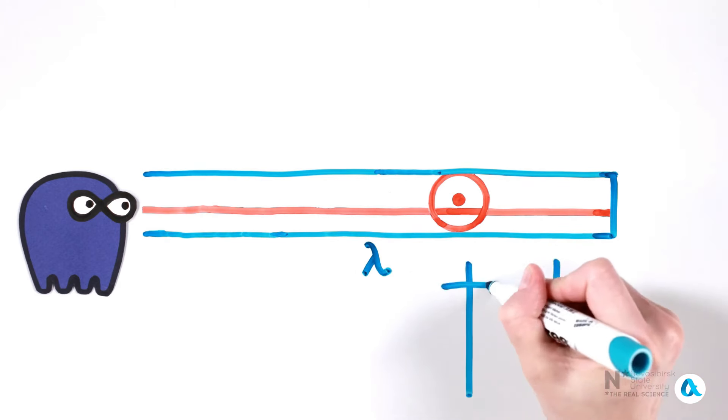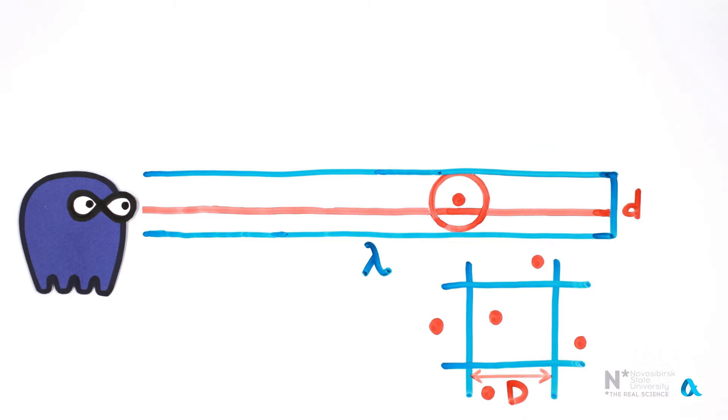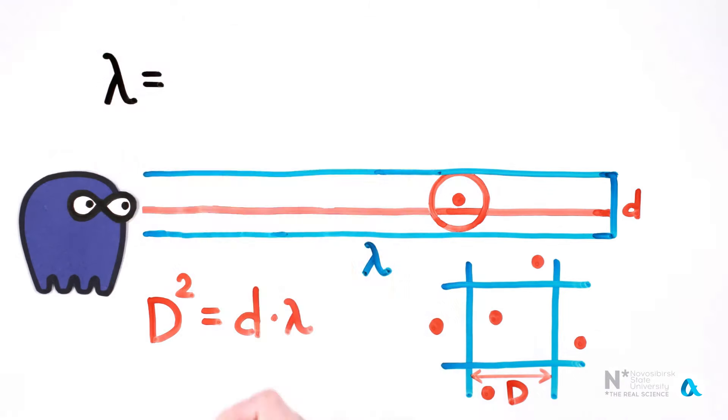Then it turns out that the area in the forest corresponding to one tree is equal to the area of this strip. The first area is equal to the square of the average distance between the trees. And the second area is specifically equal to the diameter of the tree precisely multiplied by the desired mean free path lambda. Hence, lambda is d squared divided by d.